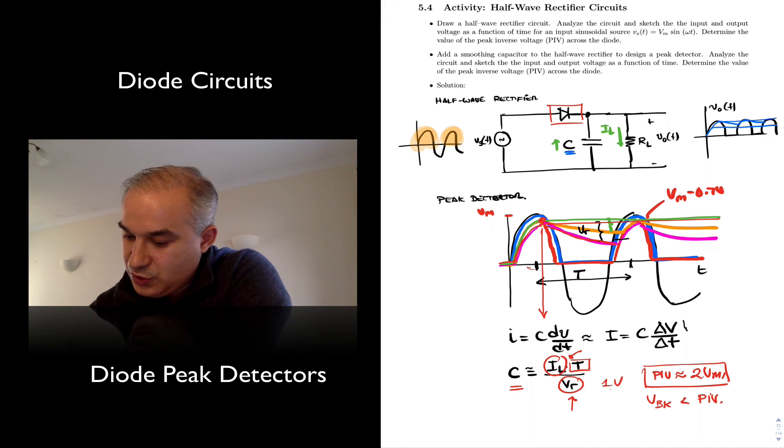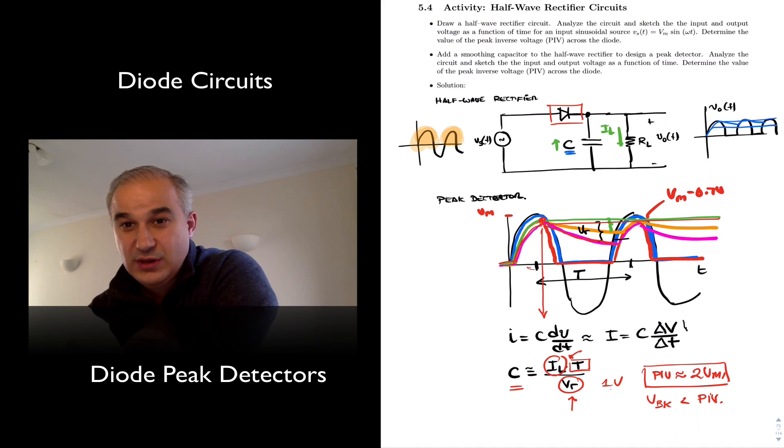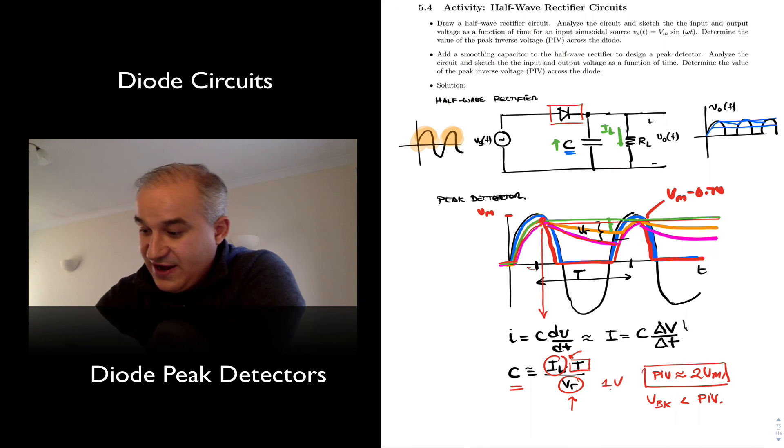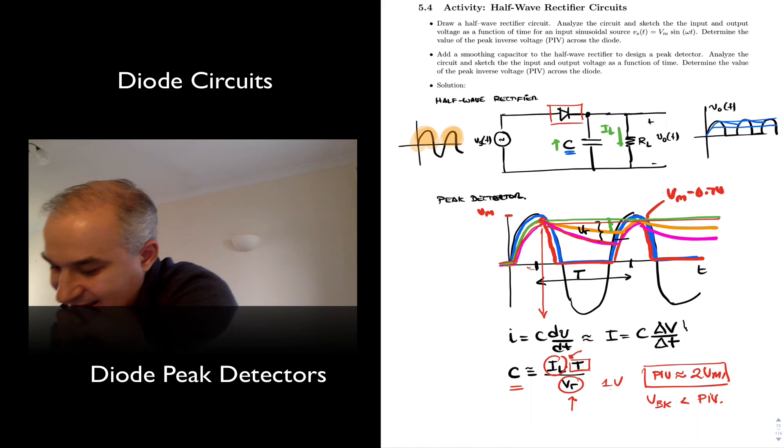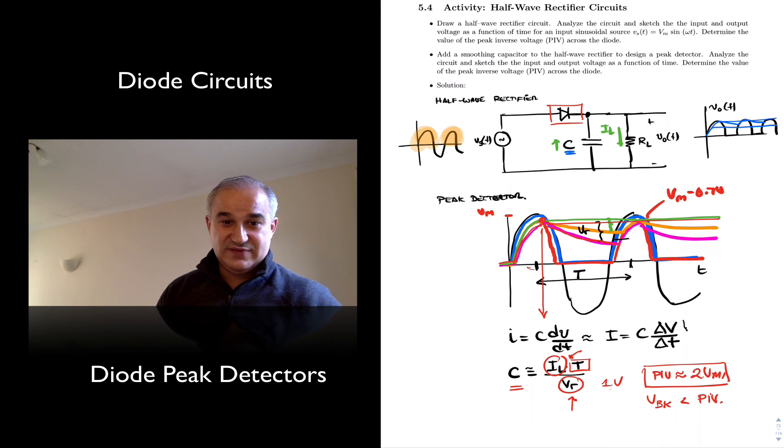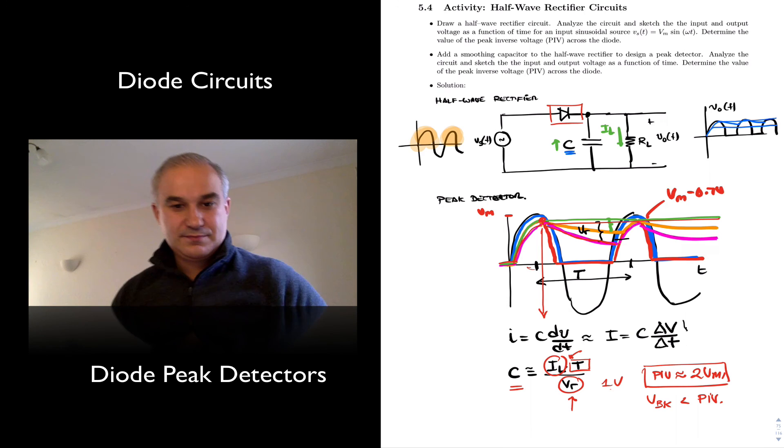So for instance, if this was 20 volts, you can have a reverse bias situation with your diode of 40 volts, close to 40 volts. It's slightly less, right? But close to that. And that's a good conservative approximation, a good conservative design. Thank you.